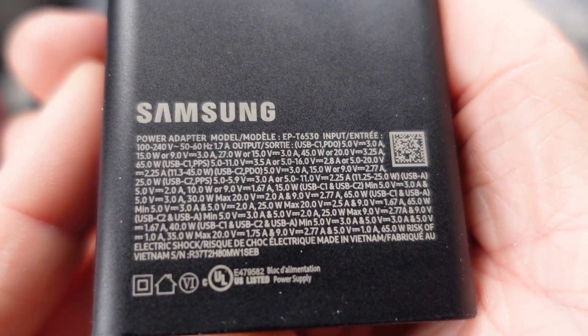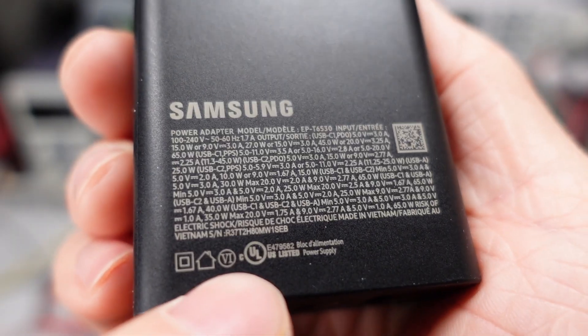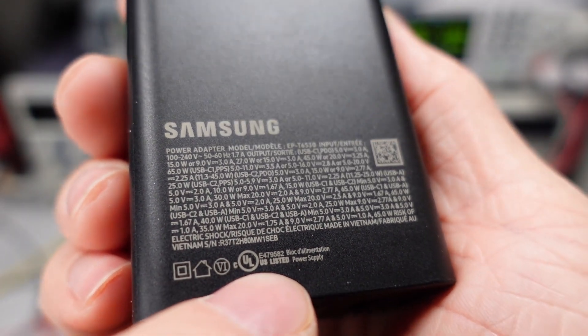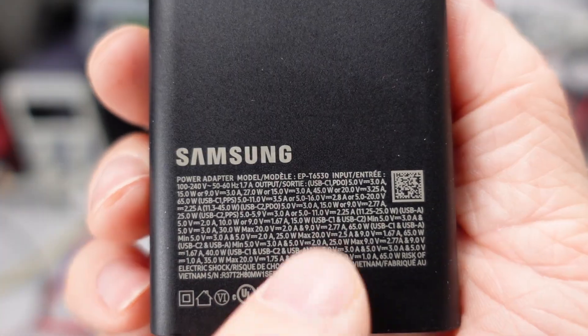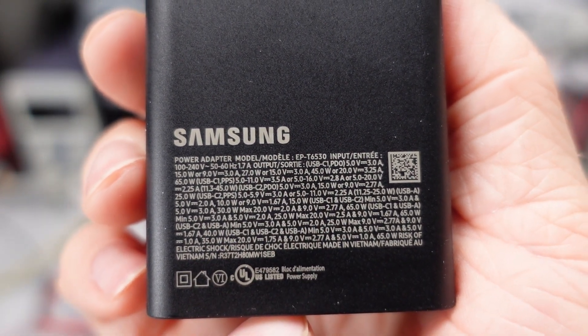They do put all the specs on the side. We see the 6 for DOE efficiency and we see the UL logo. So it has its safety listing, it has its DOE efficiency. See the model number? EPT6530.